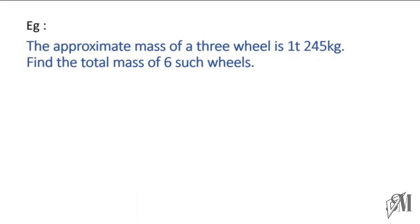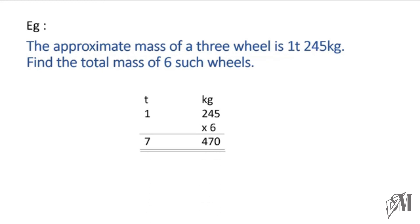Moving on to another question related to multiplication: the approximate mass of a three-wheel is 1 ton and 245 kilograms. Find the total mass of 6 such three-wheels. What we have to do is multiply the mass of one three-wheel by 6. Remember, in the kilograms column you can have a maximum of 999 kilograms. When you do the multiplication using the normal method, 7 tons and 470 kilograms is the total mass of six such three-wheels.